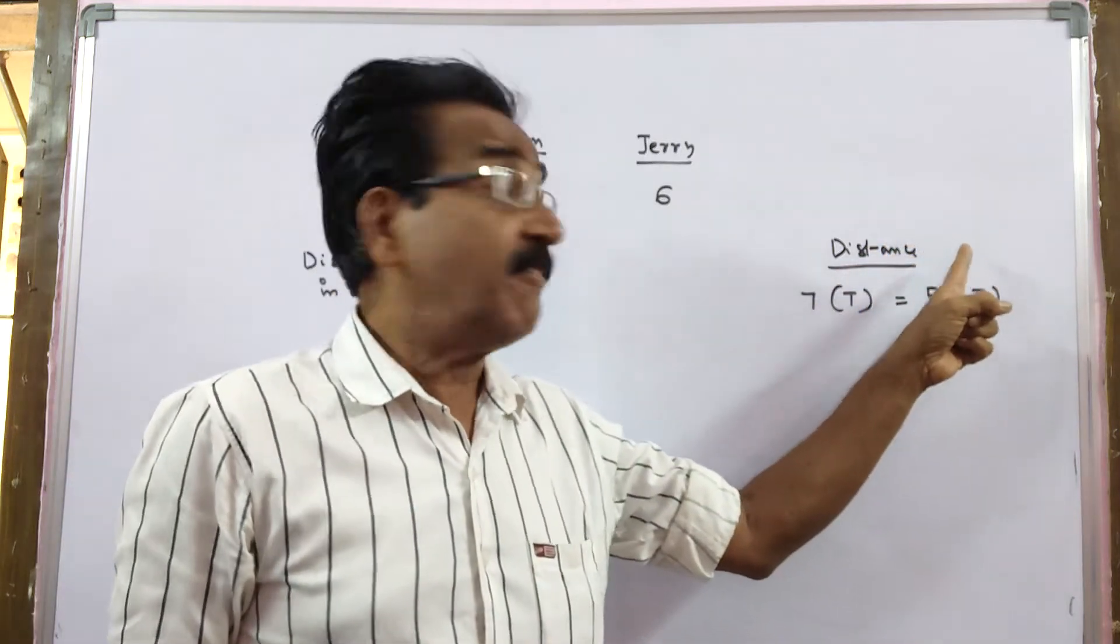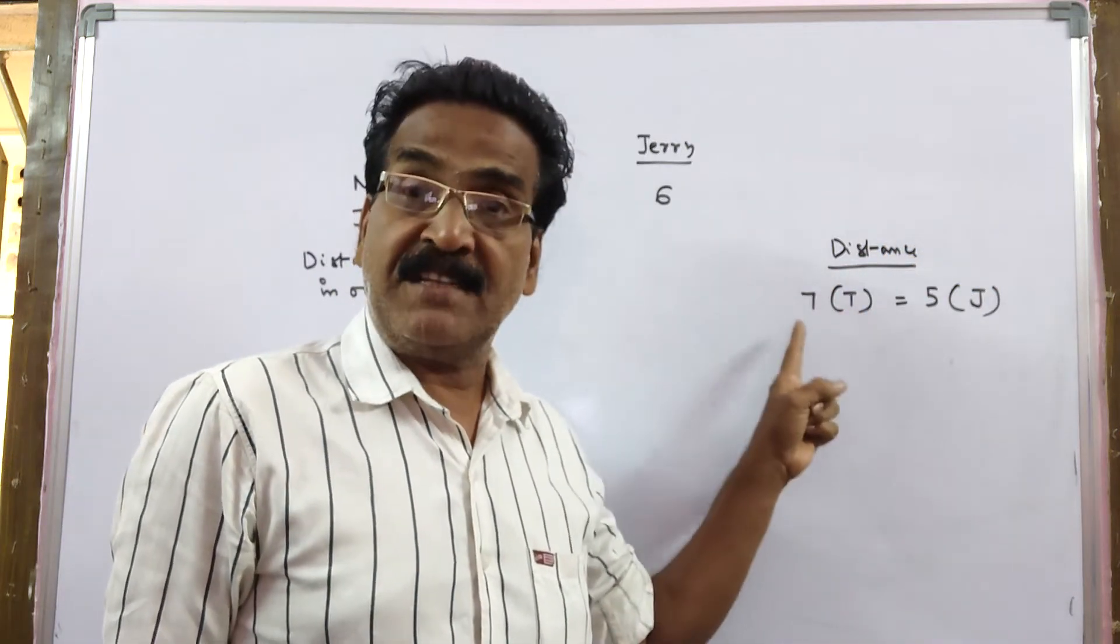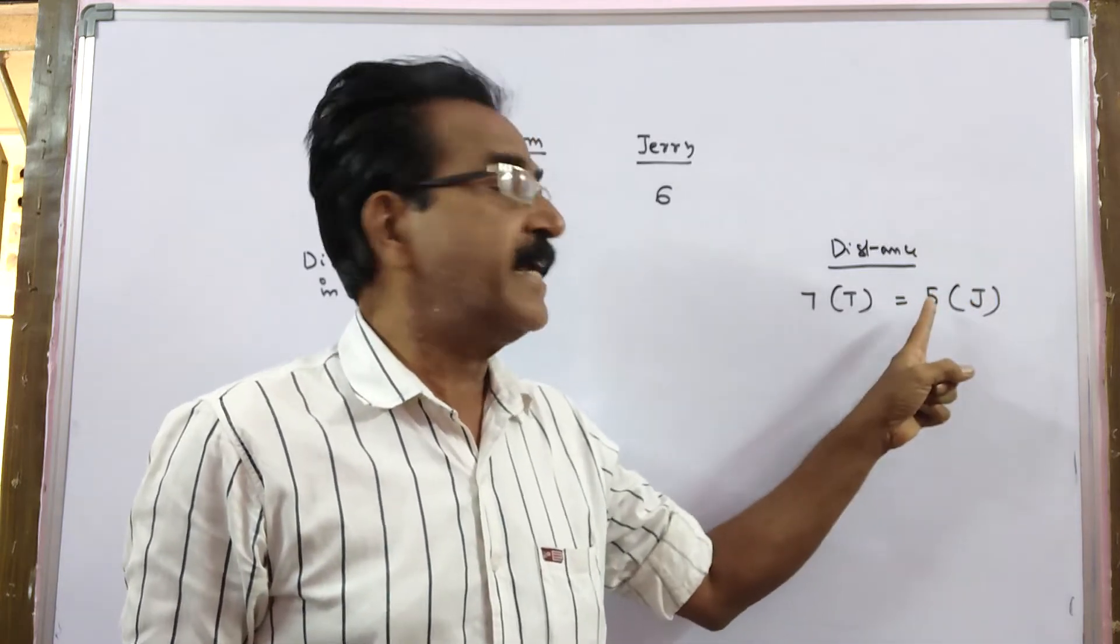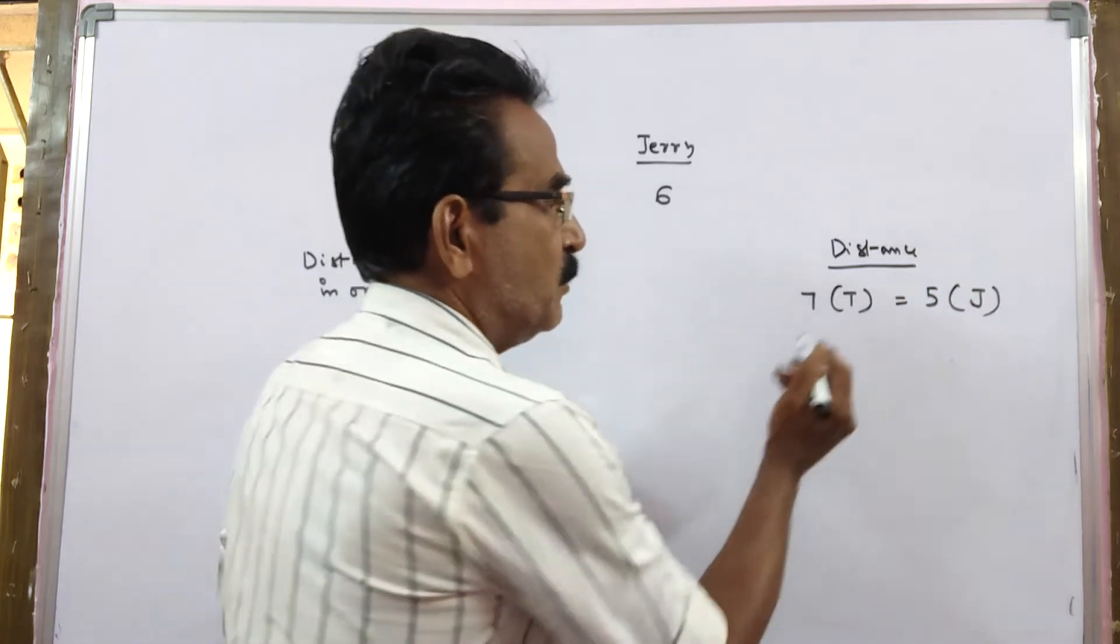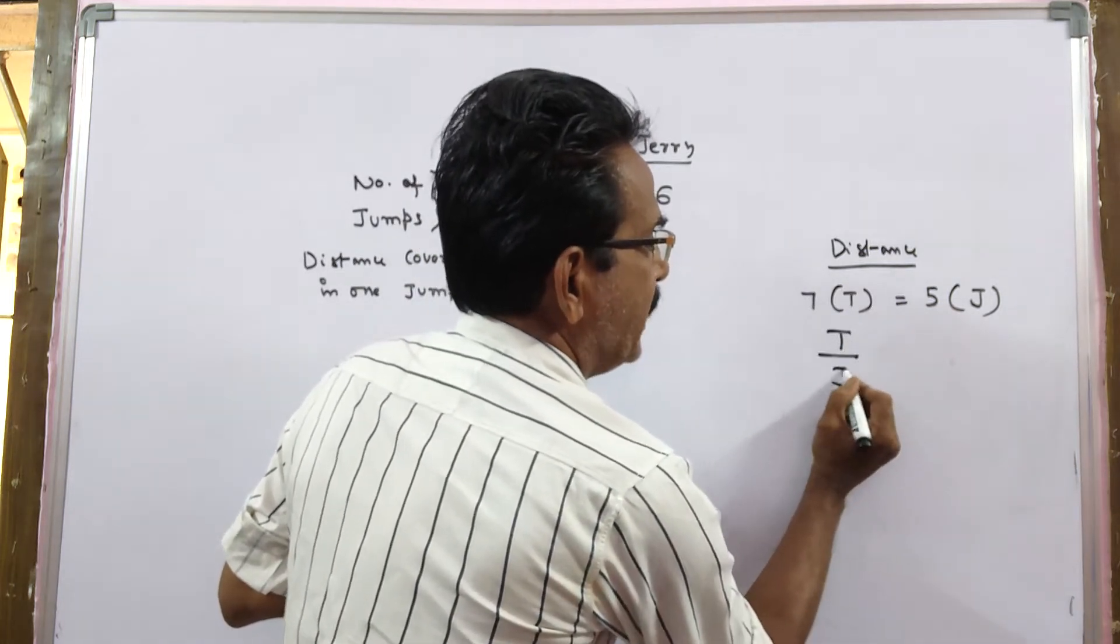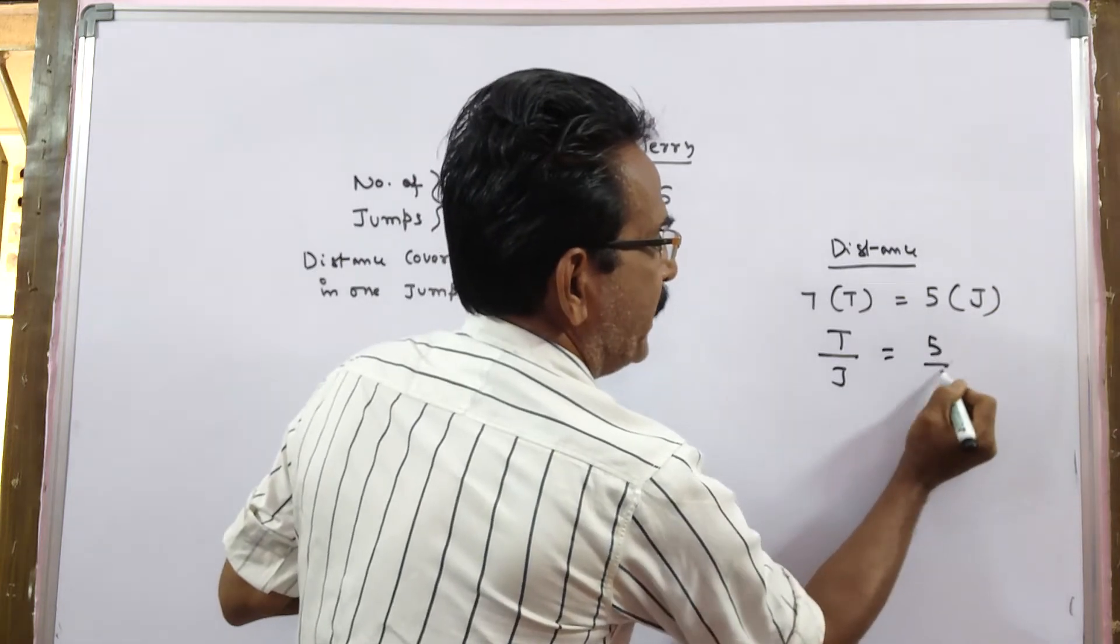But the distance covered by Tom in 7 jumps is equal to distance covered by Jerry in 5 jumps. So, 7T is equal to 5J. So, Tom by Jerry is equal to 5 by 7.